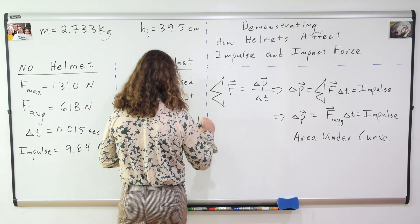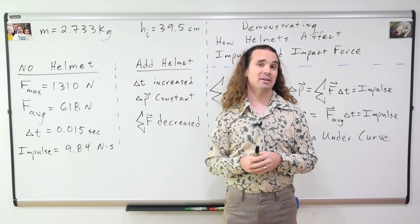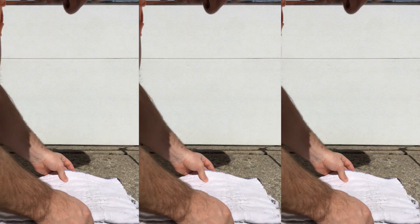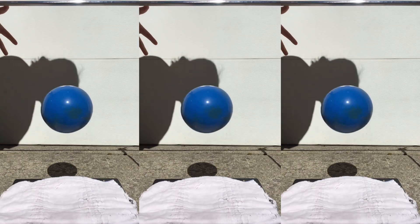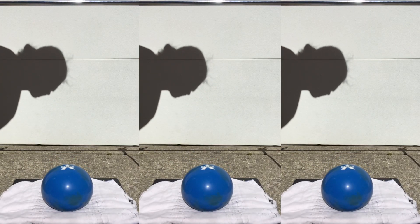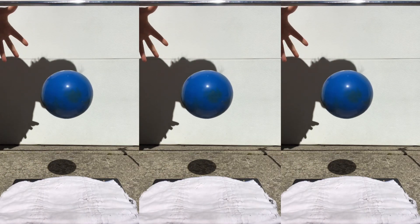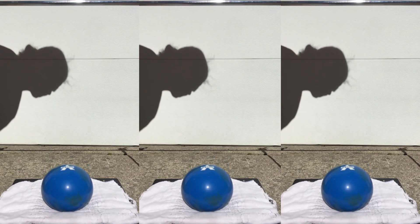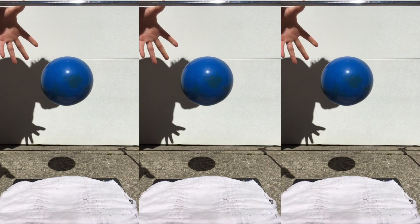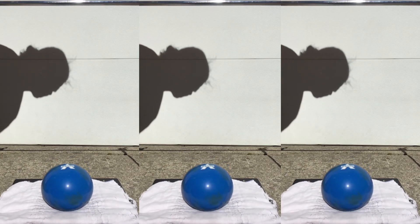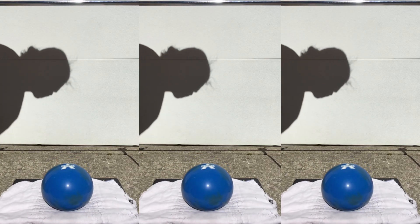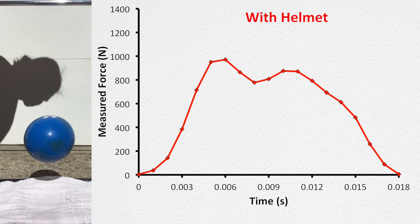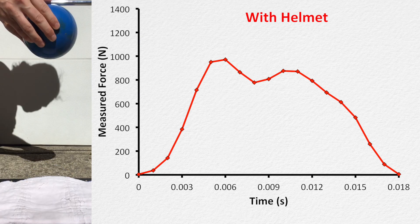Thank you, Billy. Now let's give the medicine ball a helmet. Wait — I think that's a cloth diaper, not a helmet. That's true, but I actually could not find a helmet which fit this medicine ball. And putting a cloth diaper on the force platform serves the same purpose: it increases the distance during the collision, and therefore increases the change in time during the collision. Now, when I drop the same medicine ball from the same height, only this time with the helmet, this is the graph of impact force as a function of time acting on the helmeted medicine ball.